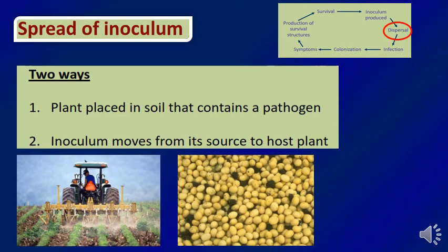The spread of inoculum depends on two ways. Either the pathogen is placed in the soil and a healthy plant is put in infected soil, so the pathogen can cause disease on the healthy plant. Or the inoculum moves from its source to the host plant by wind, splashing, or other means. These are the two ways the pathogen can reach the plant, make contact, and start the disease cycle.